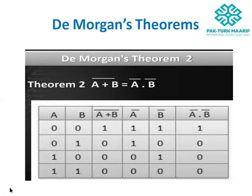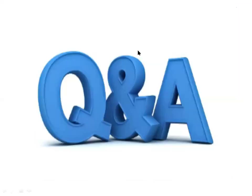For A complement: A=0 gives 1, A=0 gives 1, A=1 gives 0, A=1 gives 0. For B complement: B=0 gives 1, B=1 gives 0, B=0 gives 1, B=1 gives 0. Right-hand side A'·B': 1·1=1, 1·0=0, 0·1=0, 0·0=0. The left-hand side and right-hand side are both 1, 0, 0, 0 — both are equal, so De Morgan's second theorem is proved.